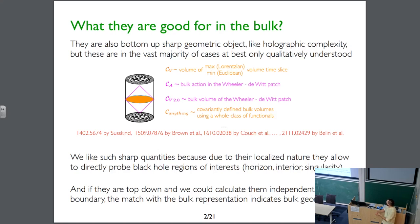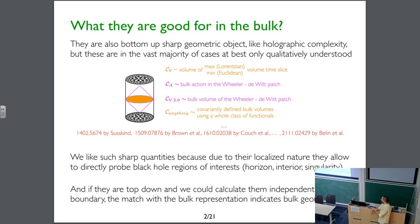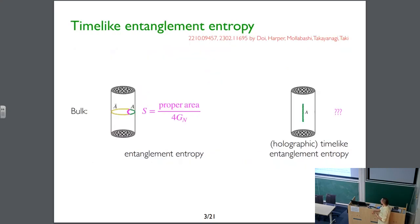There are also bottom-up sharp geometric objects like holographic complexity, but these are in the vast majority of cases only qualitatively understood. If we have a sharp quantity in the bulk, due to its localized nature it allows us to directly probe black hole regions of interest — such as the horizon, interior, and singularity. If they are top-down, then in principle we can calculate them independently on the boundary, and matching with the bulk representation indicates that bulk geometry works — a non-trivial test.